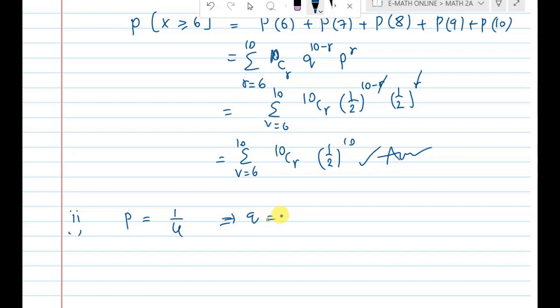If Q is automatic, 1 minus P is 1 minus 1 by 4, which is 3 by 4.